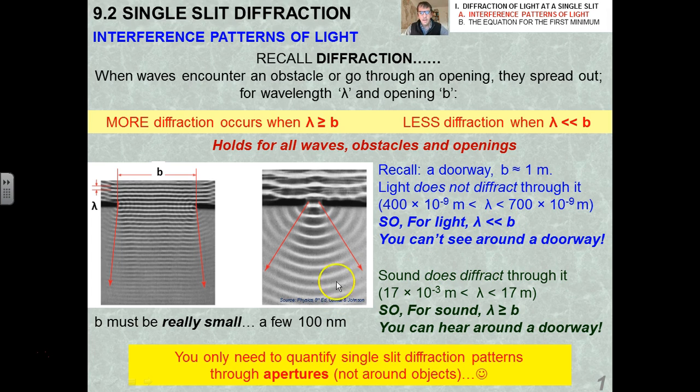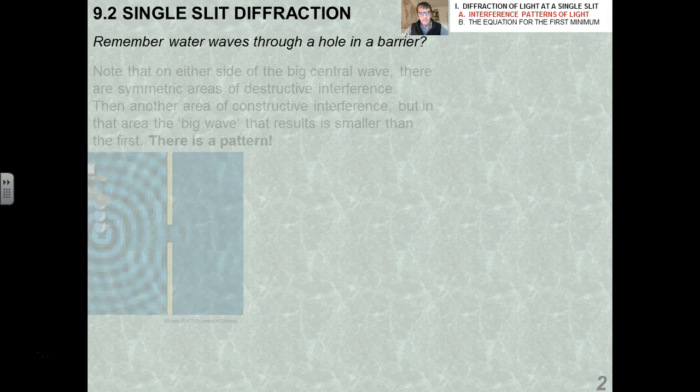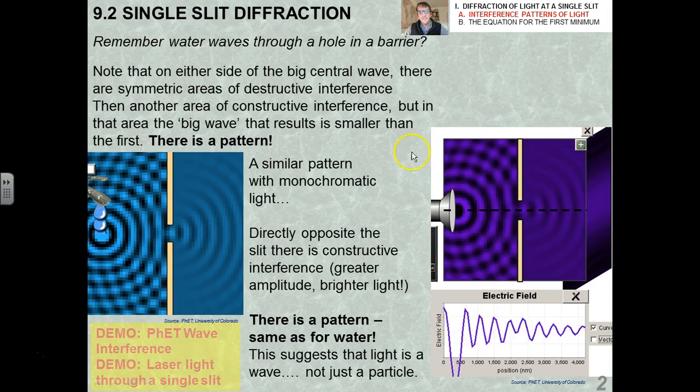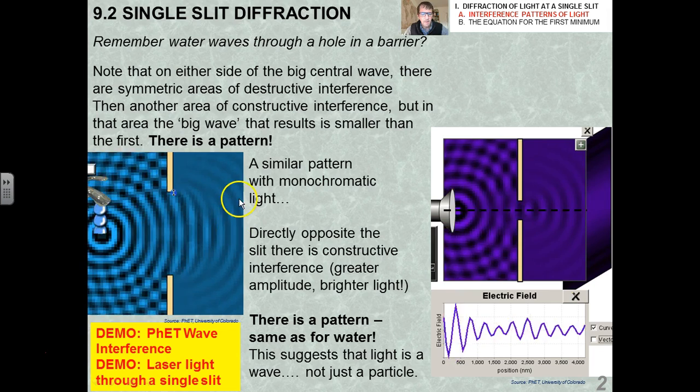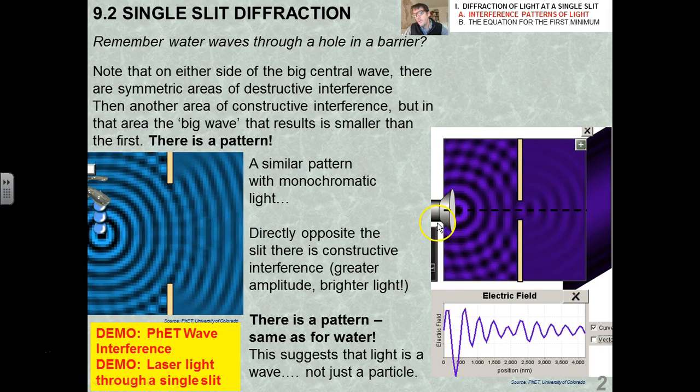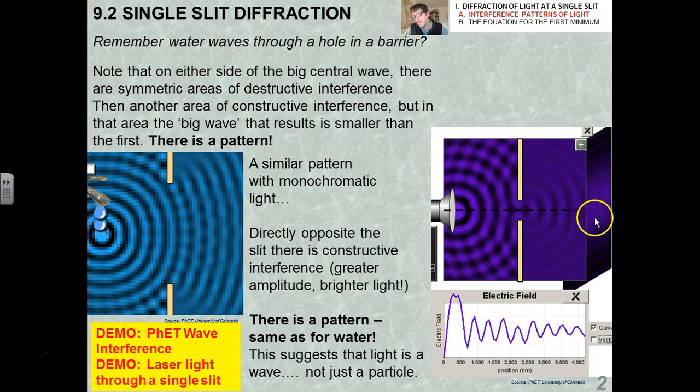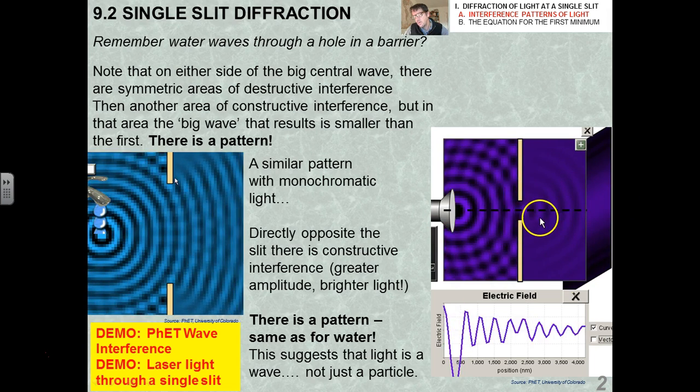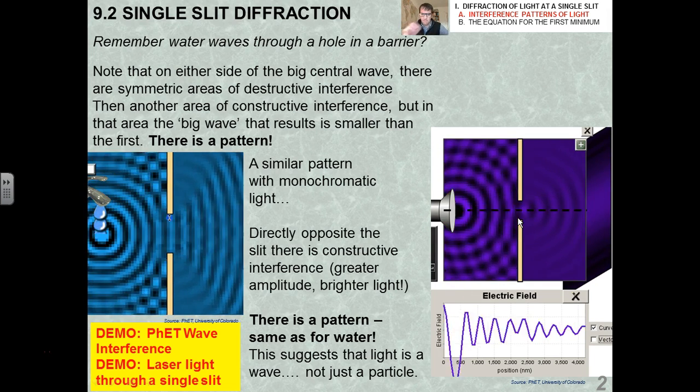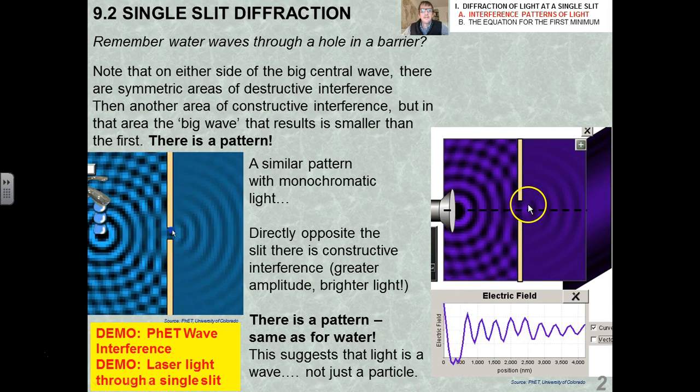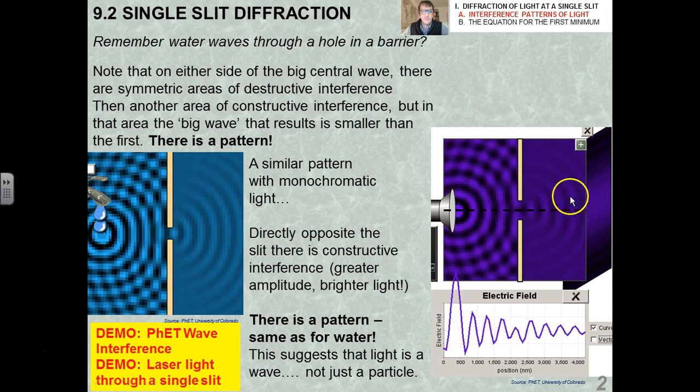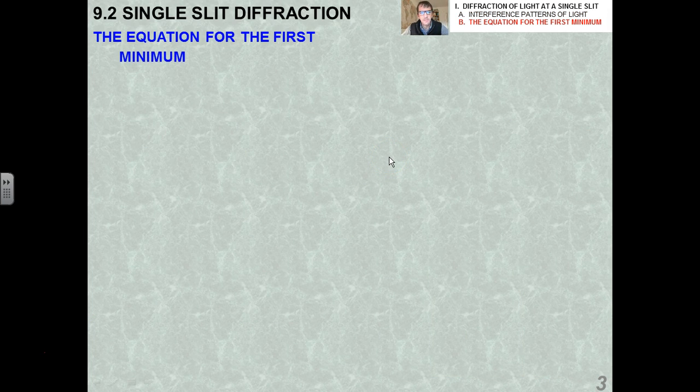Remember, this holds for all waves, obstacles, and openings. And we talked at length about why you can hear through a doorway or around a doorway, but why you can't see through it or see around it. So sound diffracts through a doorway because the average opening of a doorway, which is about a meter, is about the same as the wavelength of a sound wave, whereas light waves are much smaller.